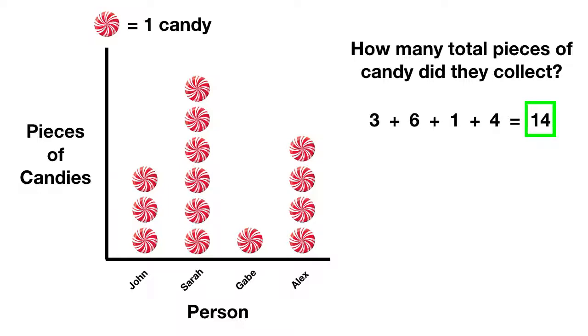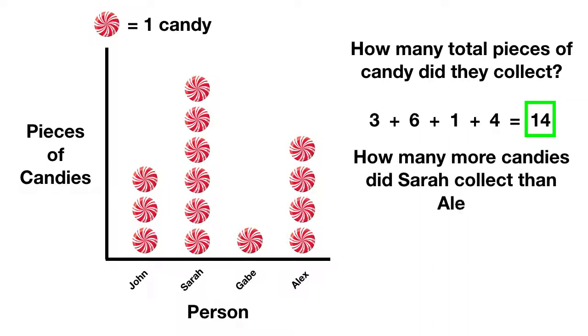We might be asked a different question. We might be asked, how many more candies did Sarah collect than Alex? In this question, we're comparing the amount that two people got, Sarah and Alex. Well, let's start by looking at Sarah. She got one, two, three, four, five, six.